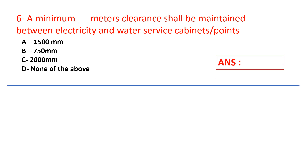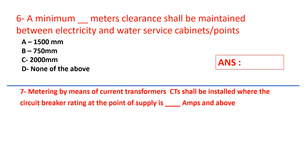Question 7: Metering by means of current transformer CTs shall be installed where the circuit breaker rating at the point of supply is [blank] amps and above. Your answers are: a. 70, b. 100, c. 160, d. 120.